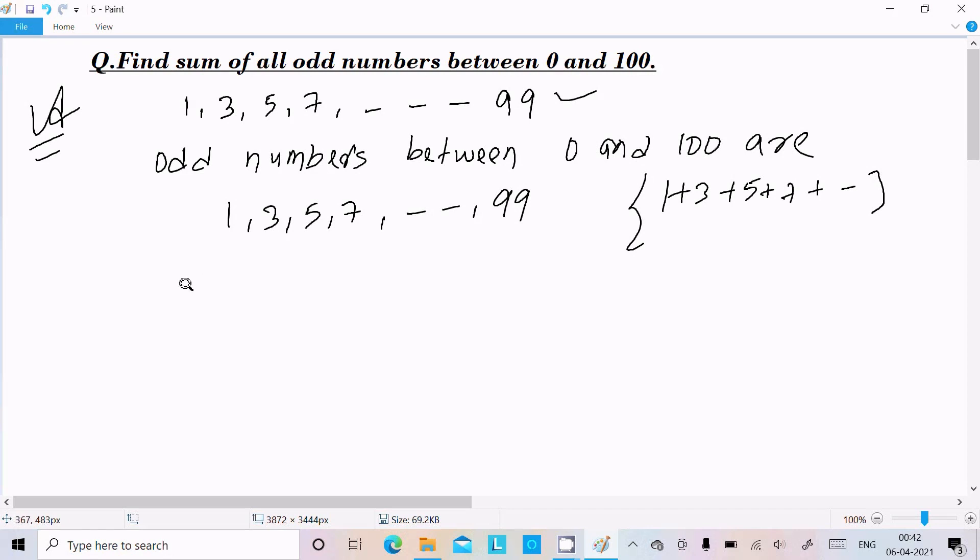We'll use the AP formula: an = a + (n-1)d. The last term an = 99, a is the first term which is 1, and d is the common difference between two consecutive numbers. For example, 3 - 1 = 2 or 5 - 3 = 2, so d = 2.